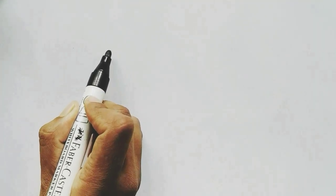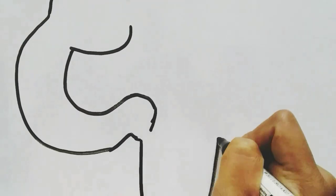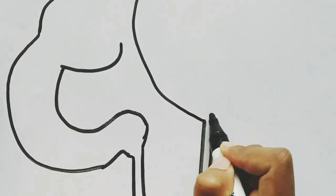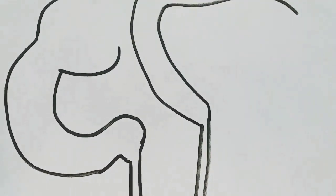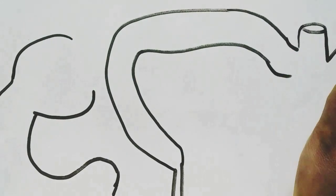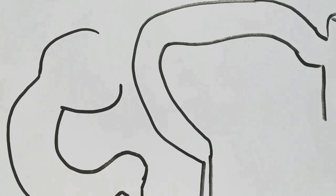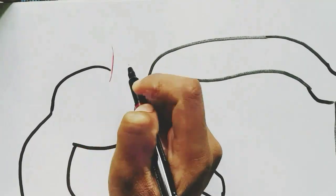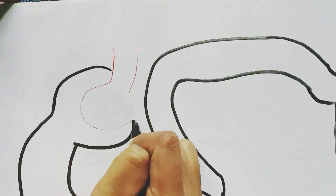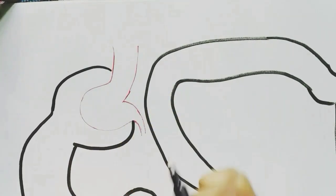Now we will look into the cells of the nephron — the head of the nephron, the proximal convoluted tubule, the Henle's loop, the thick ascending loop of Henle, and the distal convoluted tubule connecting to the collecting duct.